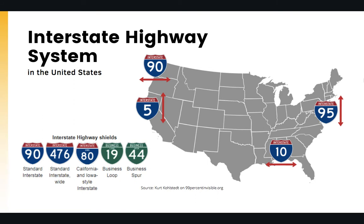The way these highways are numbered: ones going south-north are odd numbers, and ones going east-west are even numbers, increasing from west to east and from south to north. For example, Interstate 5 (I-5) runs south-north on the West Coast in California, and all the way to the East Coast we have Interstate 95. Then there's Interstate 10 versus Interstate 90 in the northern part of the United States.